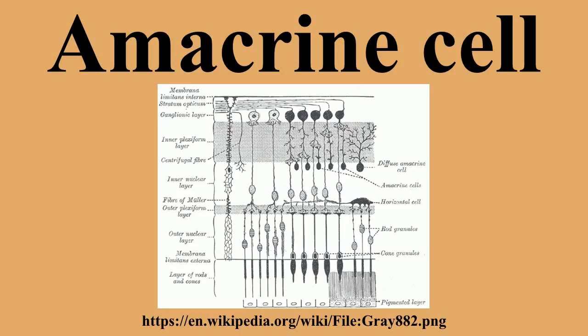Amacrine cells with extensive dendritic trees are thought to contribute to inhibitory surrounds by feedback at both the bipolar cell and ganglion cell levels; in this role they are considered to supplement the action of horizontal cells. Other forms of amacrine cell are likely to play modulatory roles, allowing adjustment of sensitivity for photopic and scotopic vision. The AII amacrine cell is a mediator of signals from rod cells under scotopic conditions.